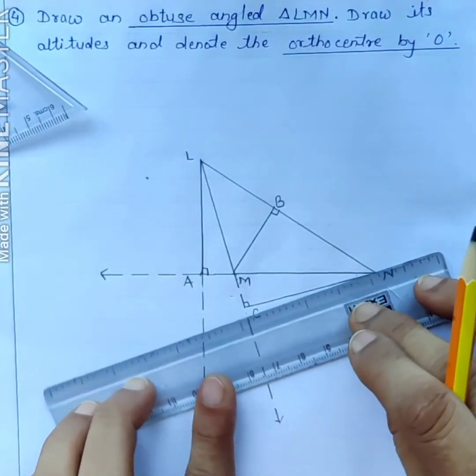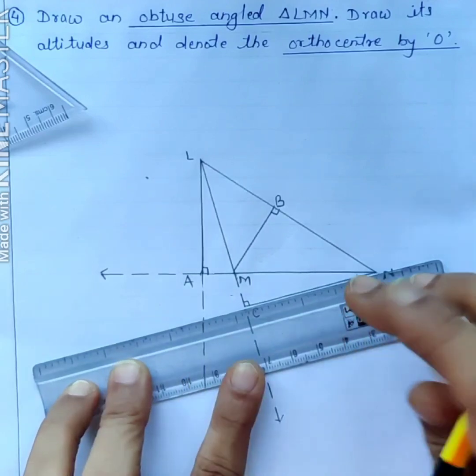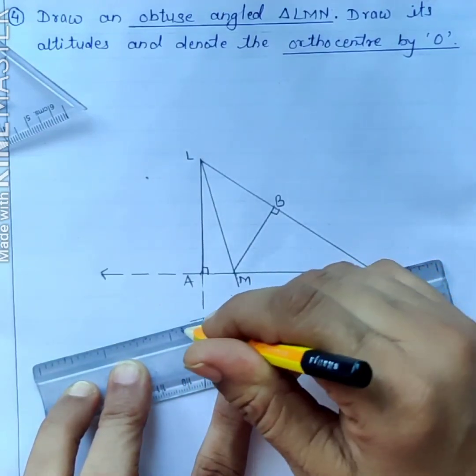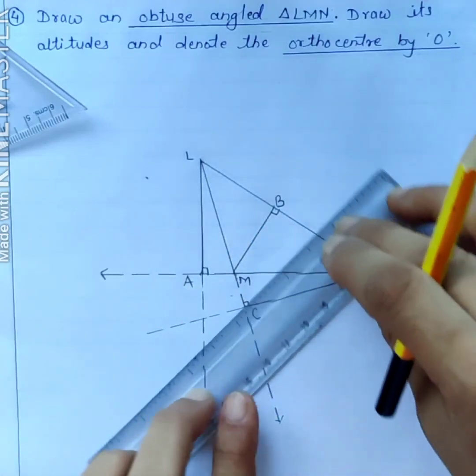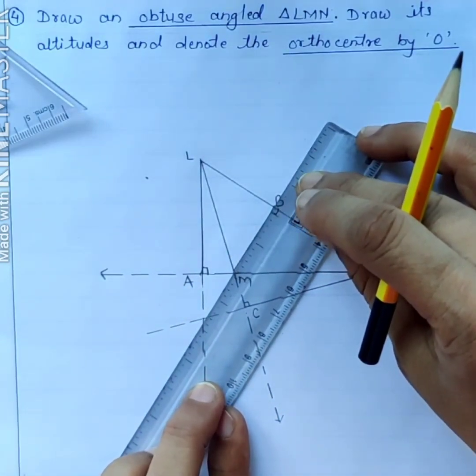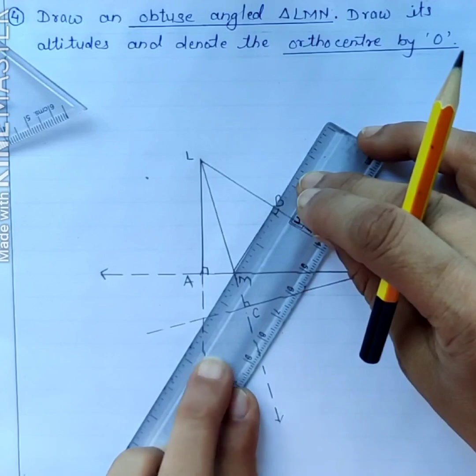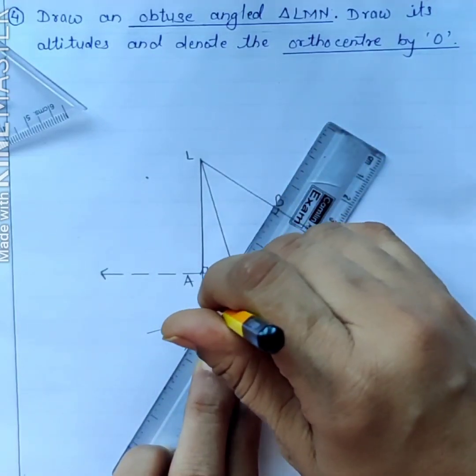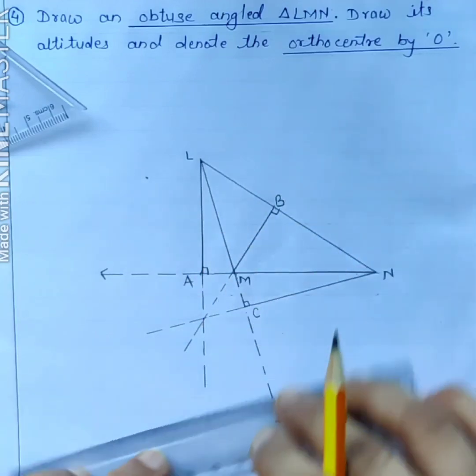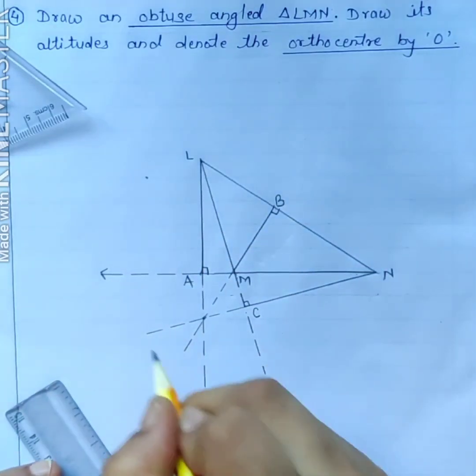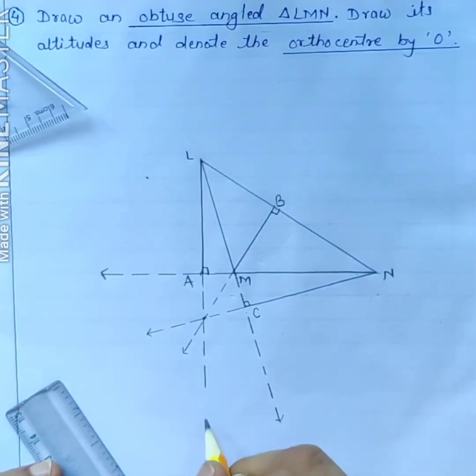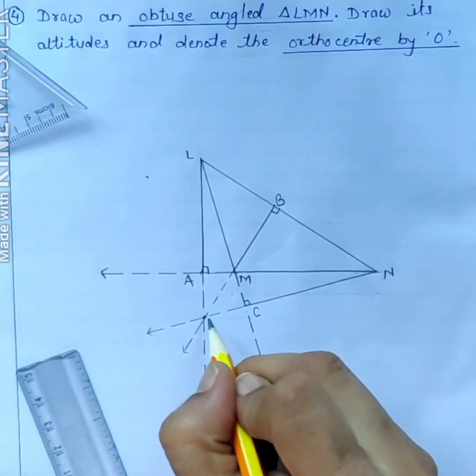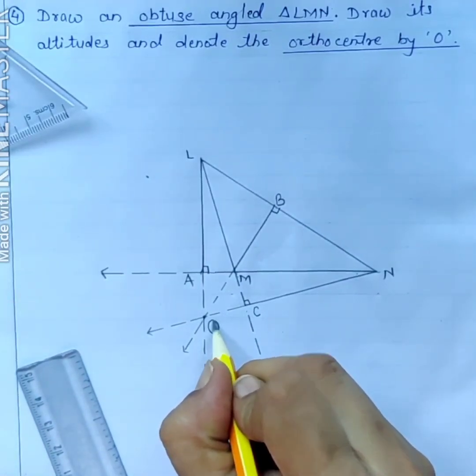Now this one, extend these altitudes. And now this one. All these three altitudes, they are concurrent. You can see they are concurrent. And the point of concurrence, that is orthocenter, denoted by letter O.